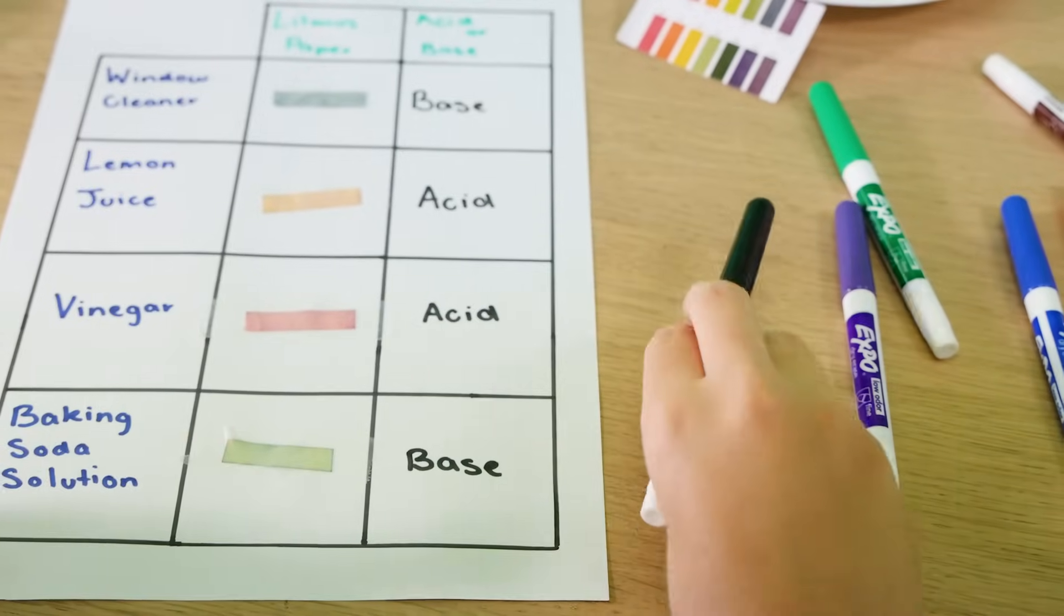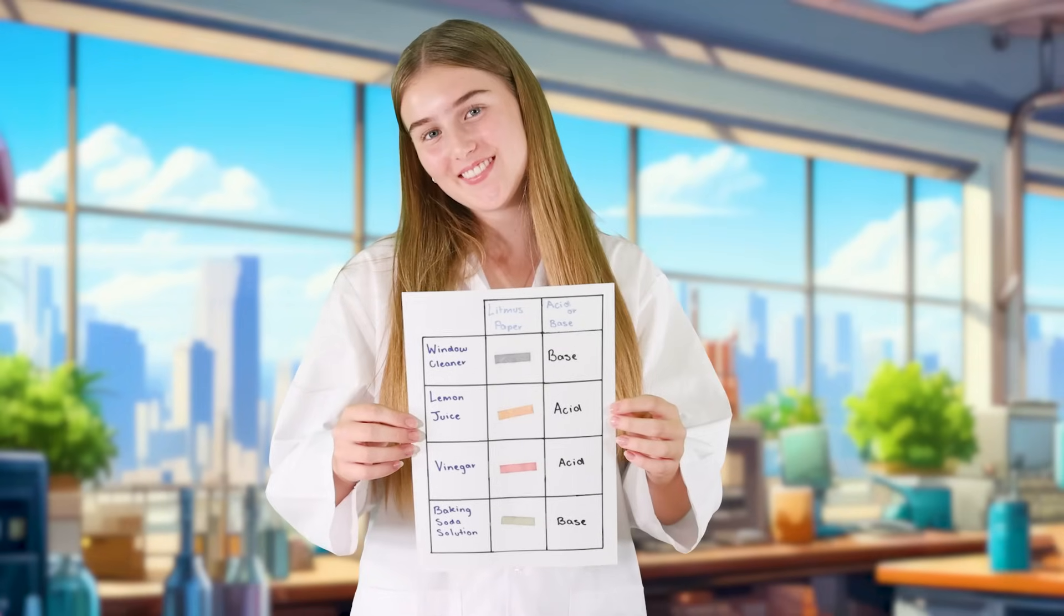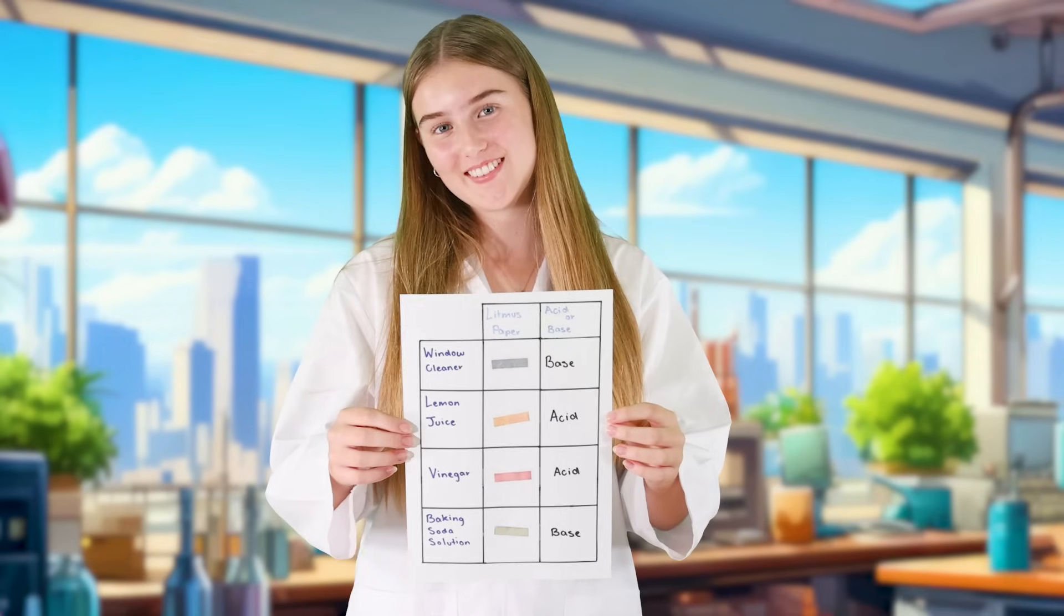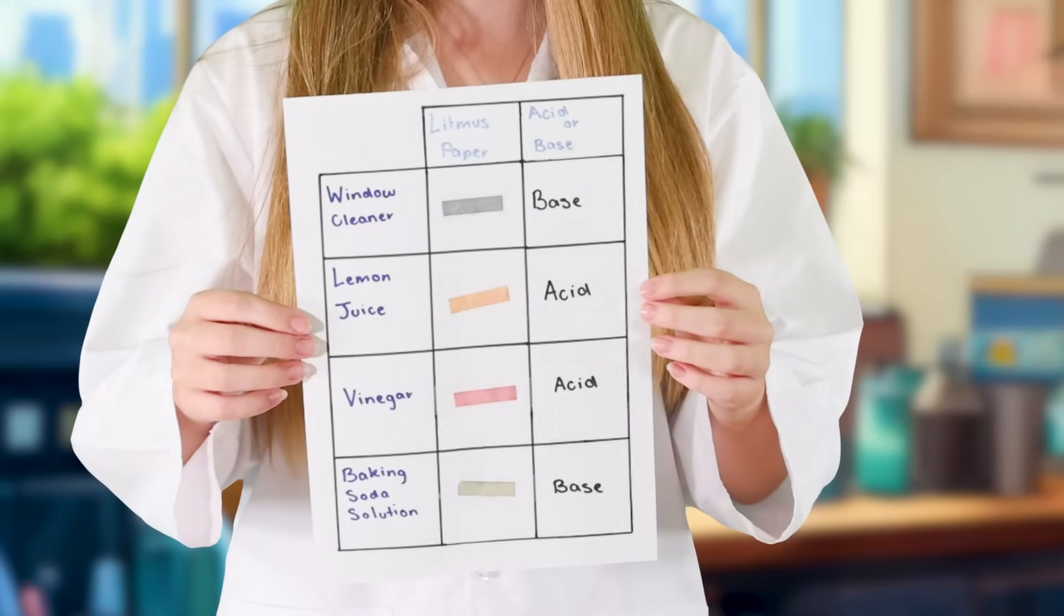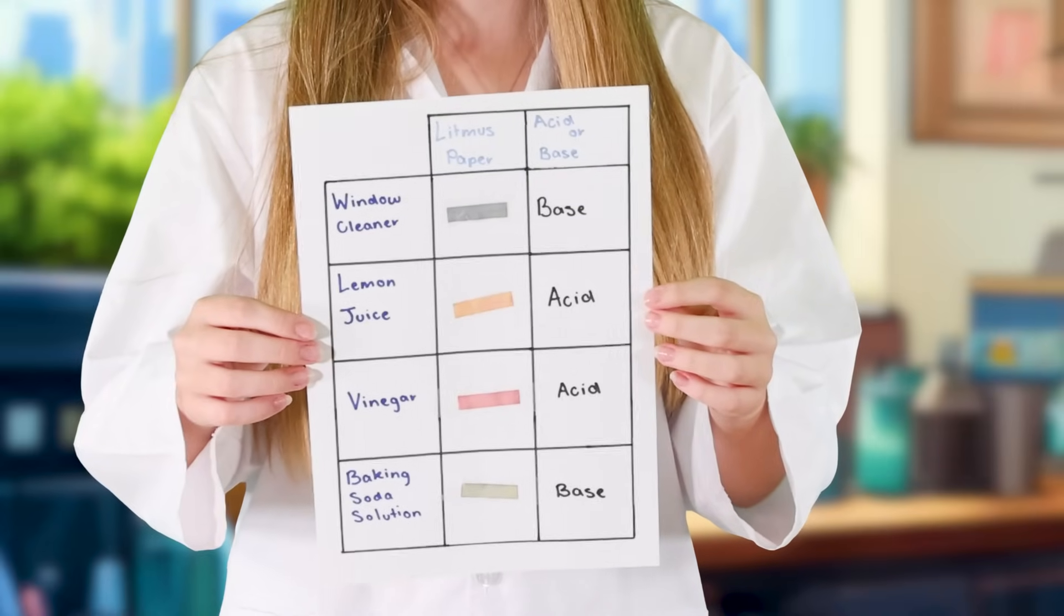Our experiment has shown that everyday substances can be classified as either acids or bases. Lemon juice and vinegar are acids, while window cleaner and baking soda are bases.